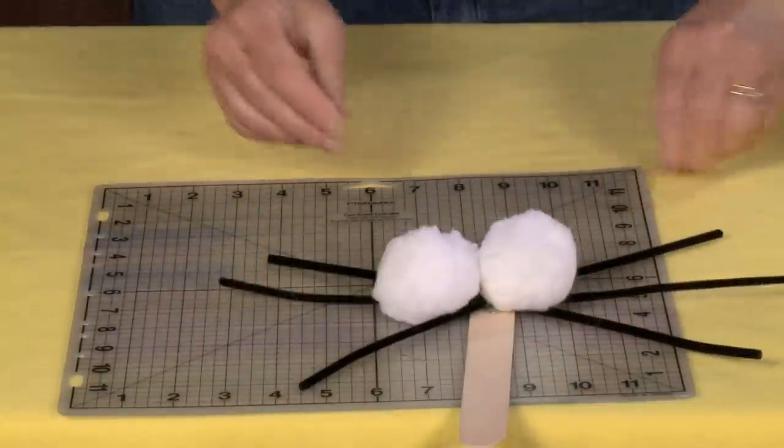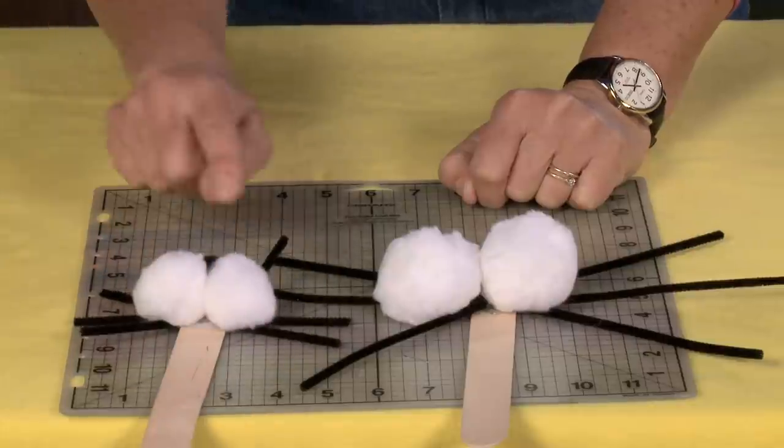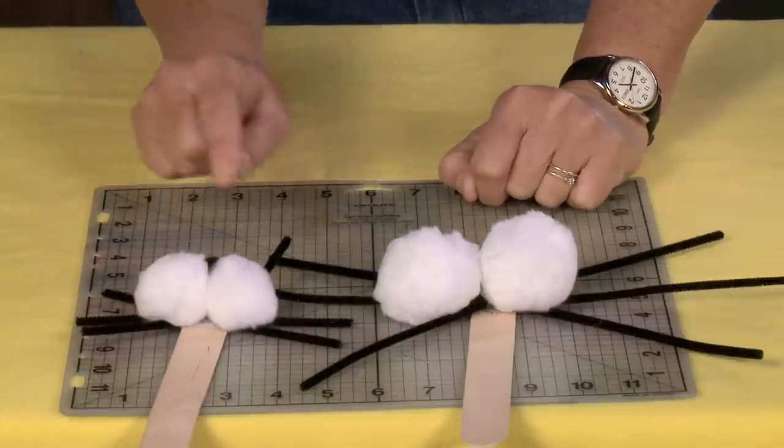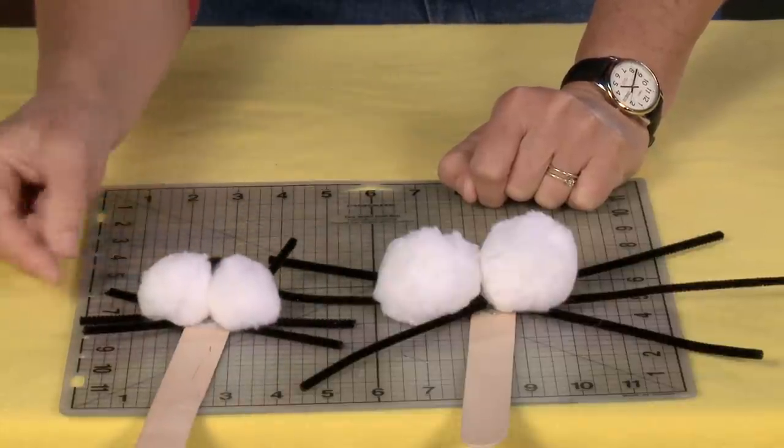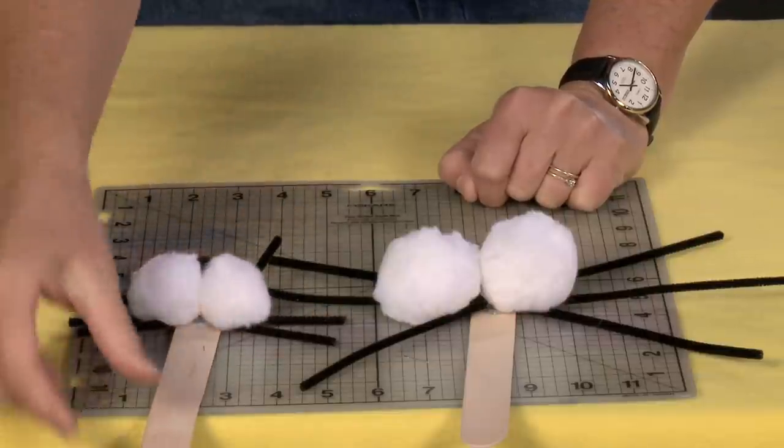Now if you want to, you can make a smaller version of it. If you can't find these big giant puff balls, you can make a smaller version. What I did here is I just cut my pipe cleaners in half. I did exactly the same thing but I just cut my pipe cleaners in half, and there you have it.